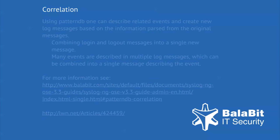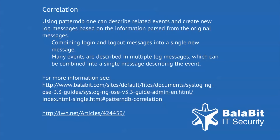Message correlation in syslogng operates on log messages successfully identified by the pattern database. You can extend the rules describing message patterns with instructions on how to correlate the matching messages. Correlating log messages involves collecting the messages into message groups called contexts. A context consists of a series of log messages that are related to each other in some way — for example, the log messages of an SSH session can belong to the same context.